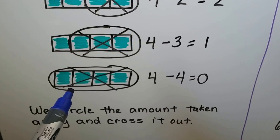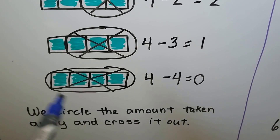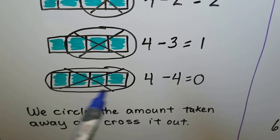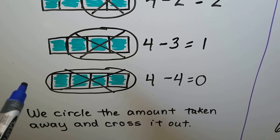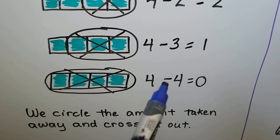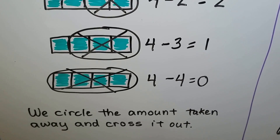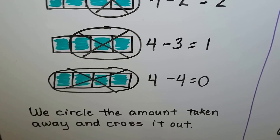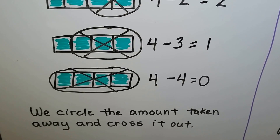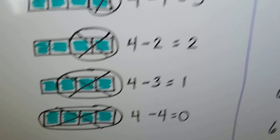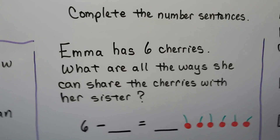If we take all of them away and take away four, we circle all four, we cross them out, and we can see there are zero left. Four minus four is equal to zero. We circle the amount taken away and cross it out, then we can see what's left.